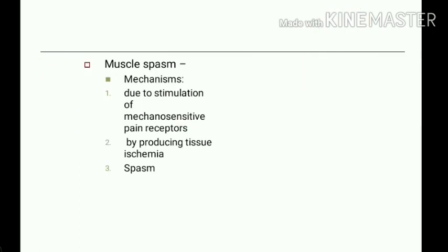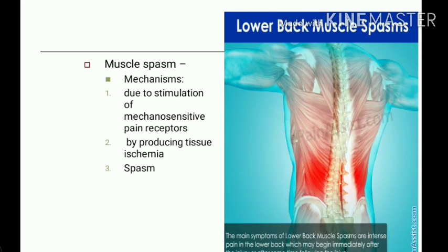Another cause is inflammation, which releases inflammatory mediators responsible for pain. Another clinical condition associated with somatic pain is muscle spasm. The mechanism of pain in muscle spasm involves stimulation of mechanosensitive pain receptors, tissue ischemia due to compression of blood vessels, and increased metabolism in the muscle causing relative ischemia and release of chemical pain-inducing substances.